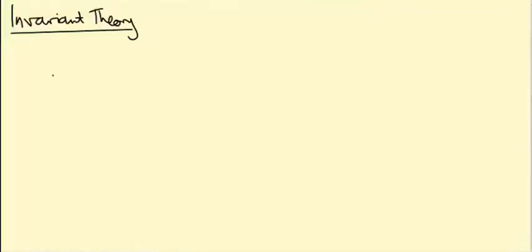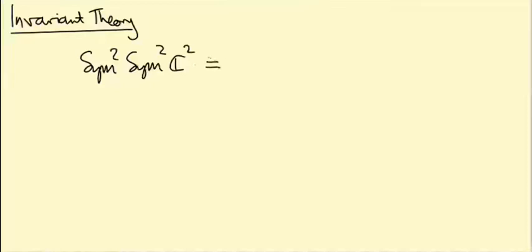This is an extra video about a subject called invariant theory. I'm only going to make the barest inroads into invariant theory in this video, but I want to explain how this grows out of the example we've just done. The example we just did was Sym2(Sym2(C²)) as a representation of SU(2) or SL(2,C), which is isomorphic to Sym4(C²) direct sum the trivial representation.